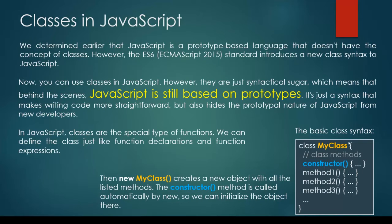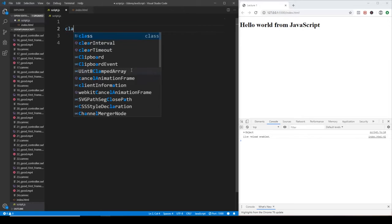This is the syntax of creating a class in JavaScript. We have to use the class keyword, then define the name of the class, then define the constructor that's going to be called automatically whenever we instantiate that given class. And then we can define as many methods as we want.